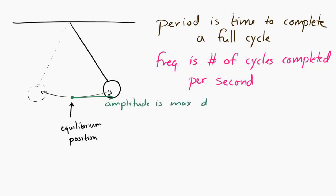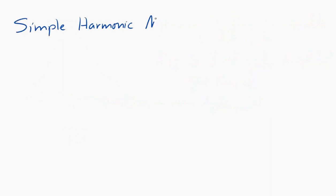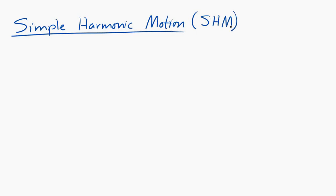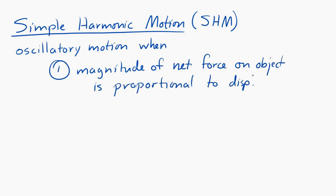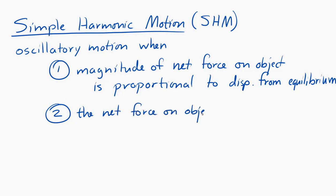One type of oscillatory motion very common in the natural world is simple harmonic motion (SHM). Simple harmonic motion is oscillatory motion when two conditions are fulfilled. Number one: the magnitude of the net force on the object is proportional to the displacement from equilibrium — the further from equilibrium, the greater the net force. Number two: the net force always points toward the equilibrium position.